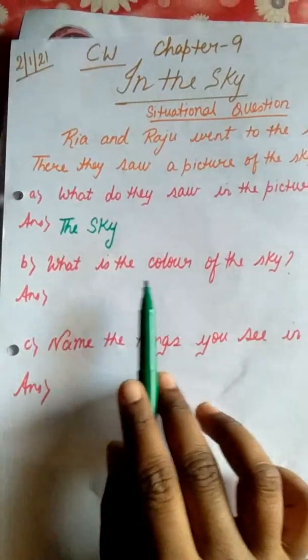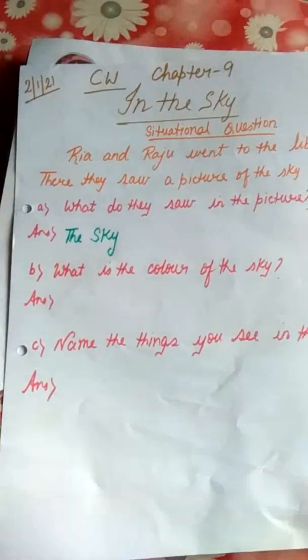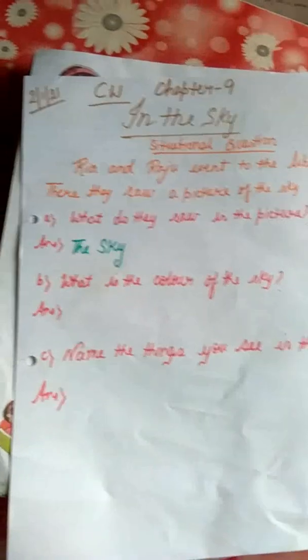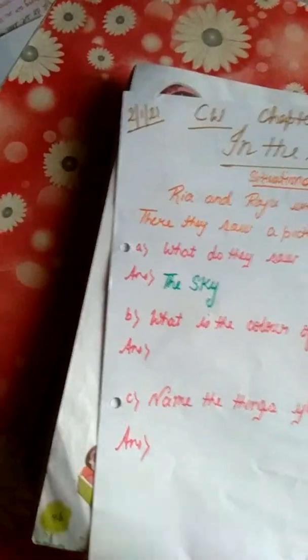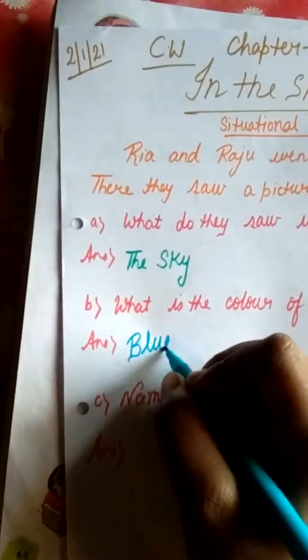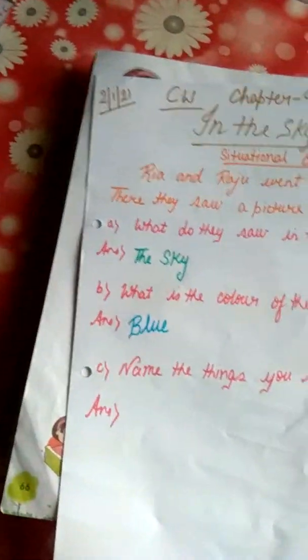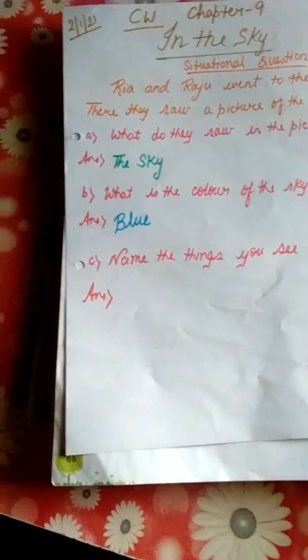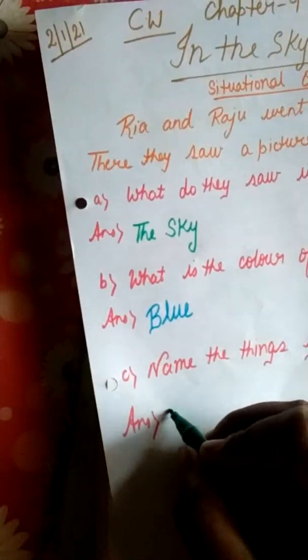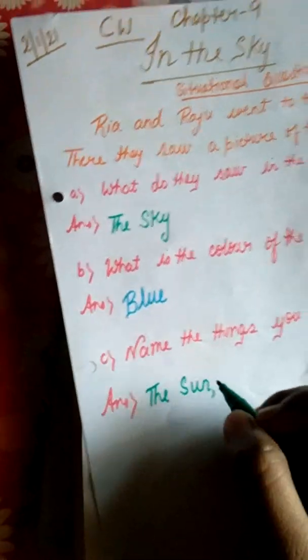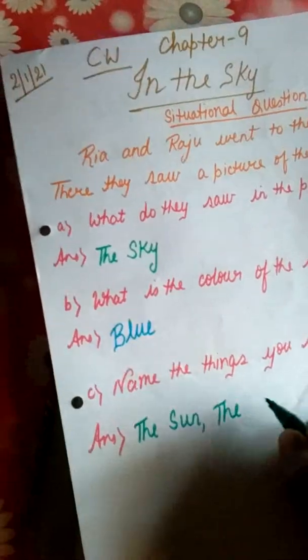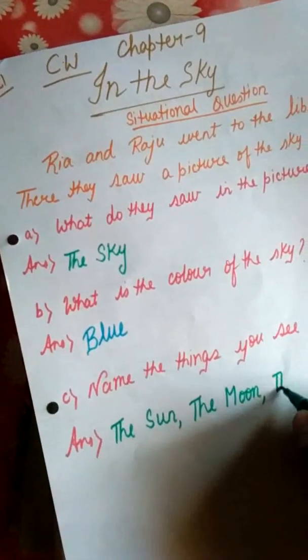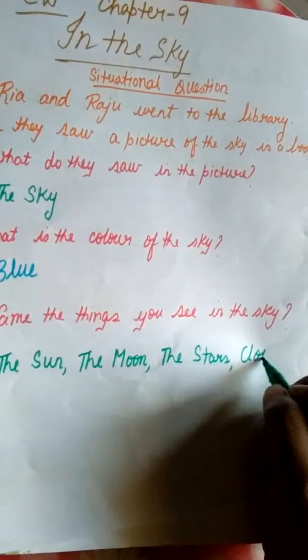Number 2: What is the color of the sky? You all know children, what is the color of the sky? Blue. Very good. The color of the sky is blue. Next: name the things you see in the sky. What are the things that you see in the sky? Let's write: the sun, the moon, the stars, clouds, rainbow.